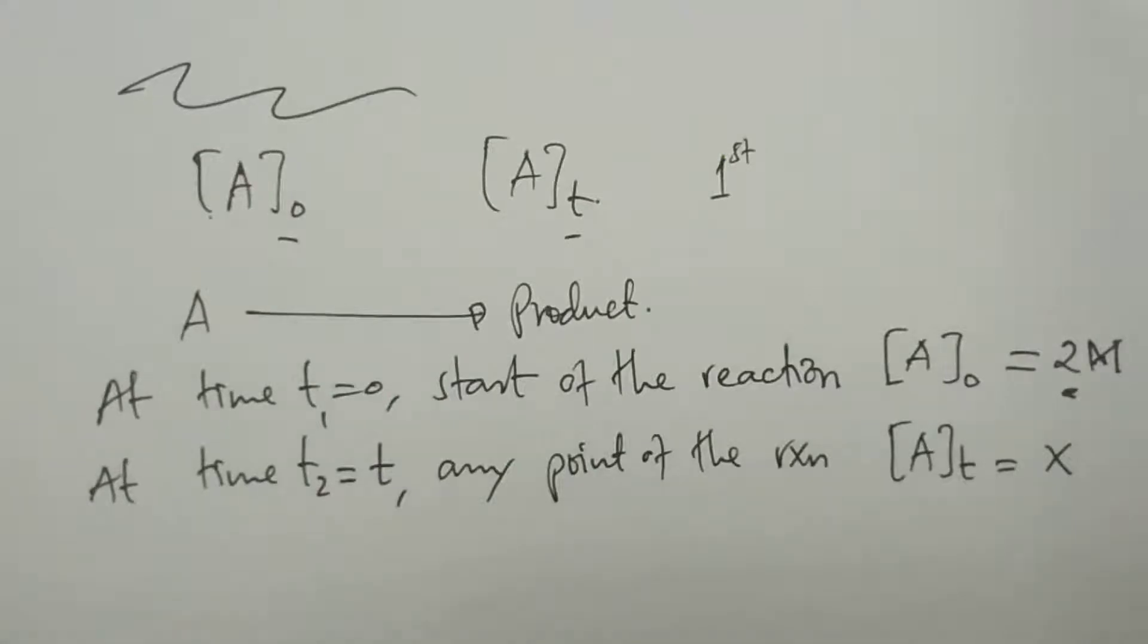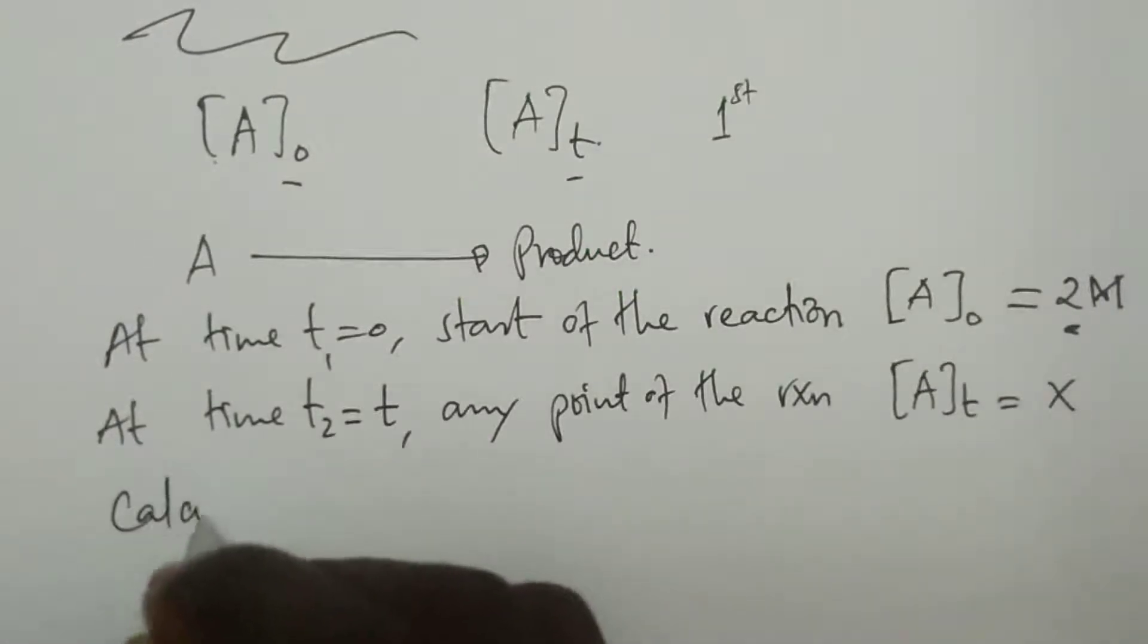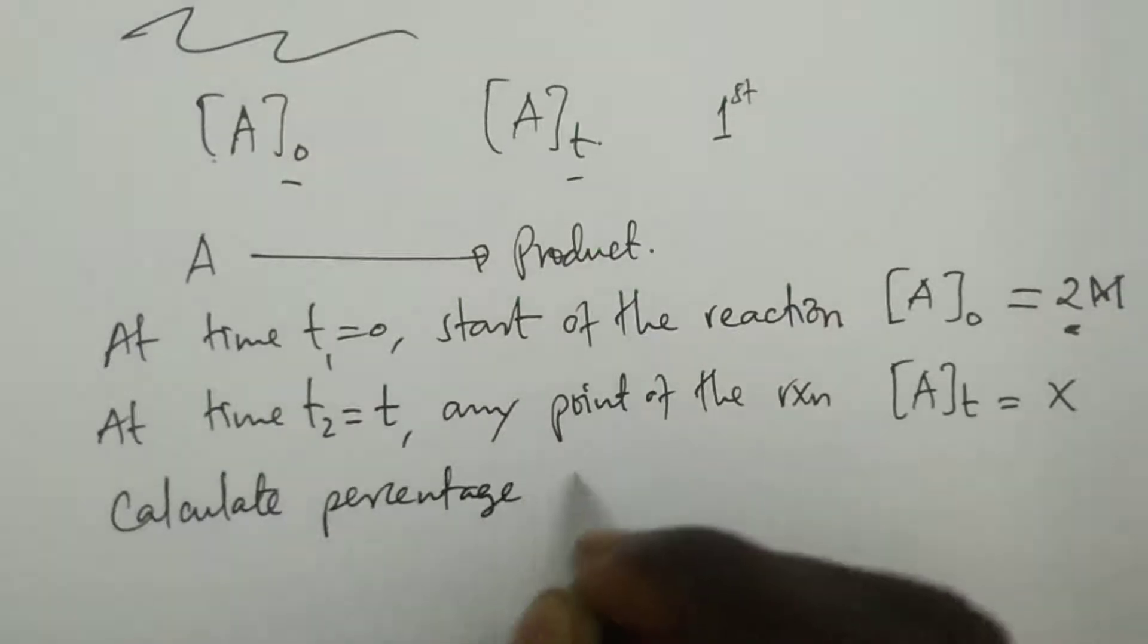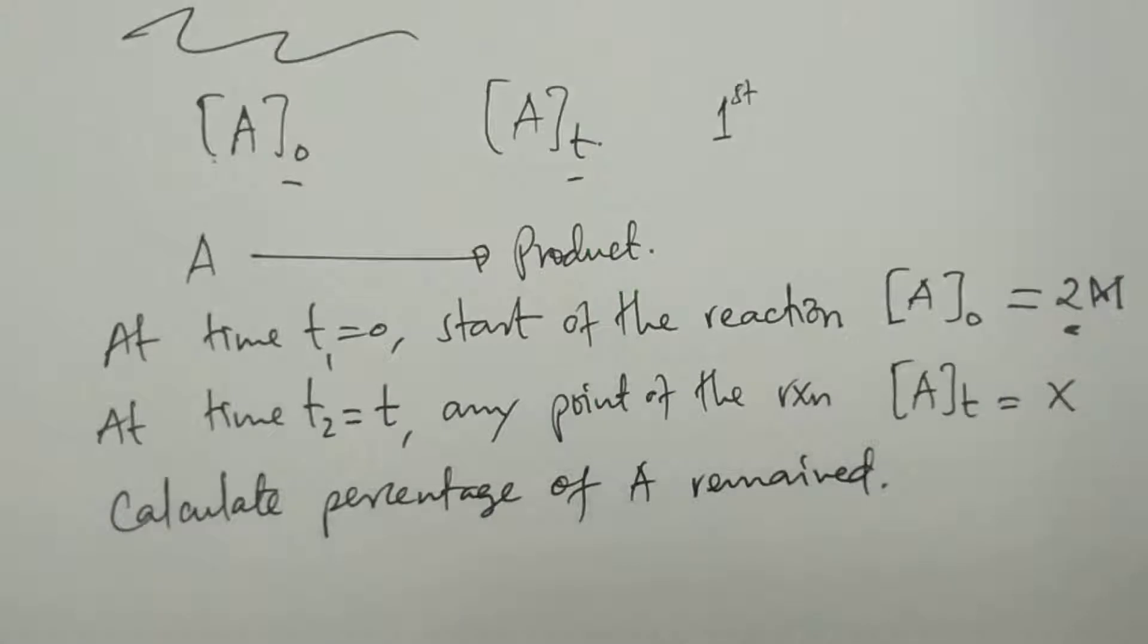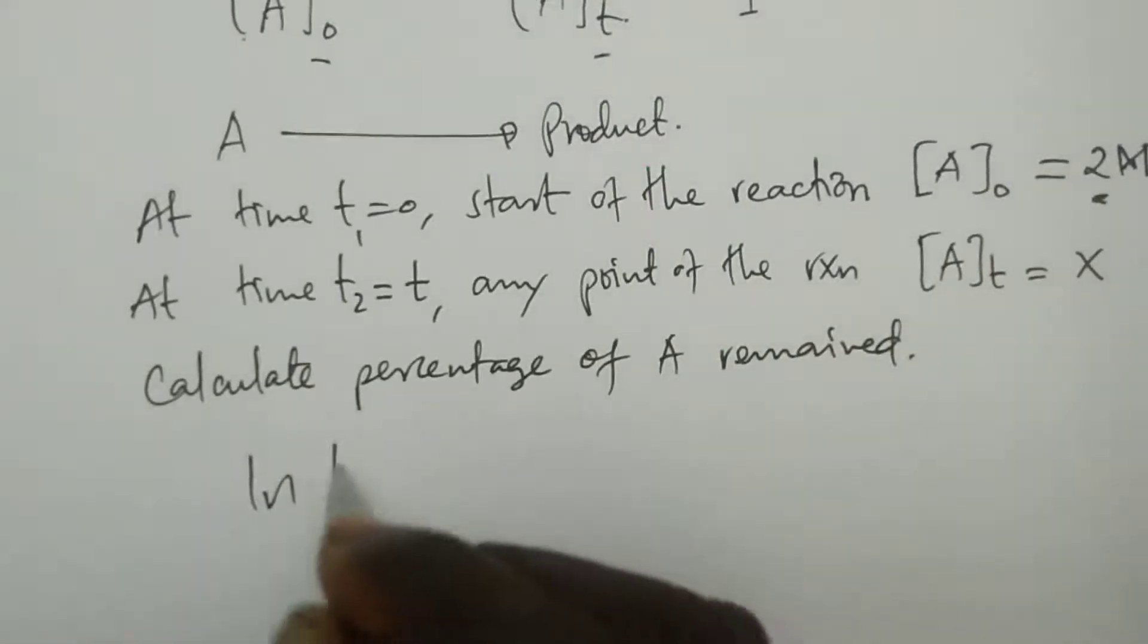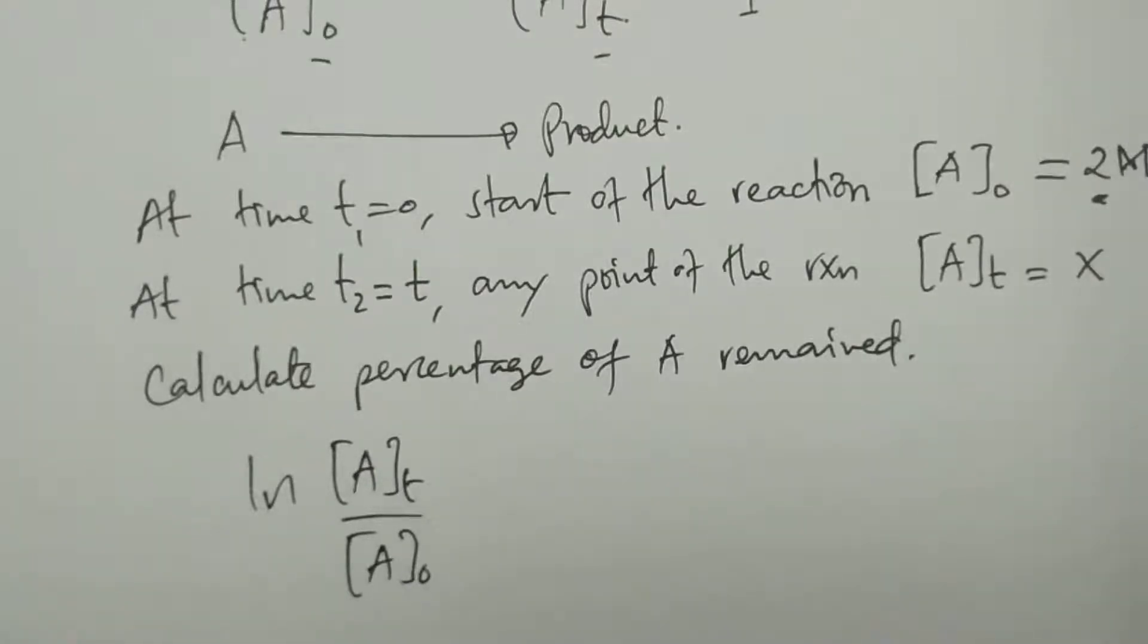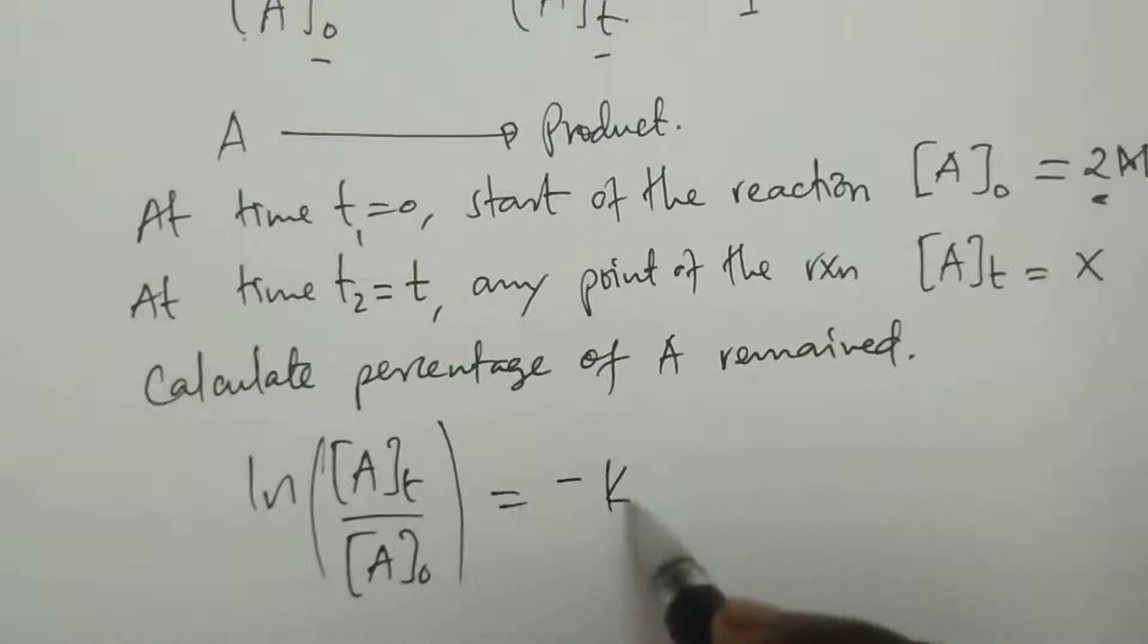Now, there are many questions that are asked. For example, you're asked to calculate percentage of A remained. Calculate percentage of A remained after time so and so. Now, if we consider the integrated equation for first order, it is ln of concentration Aₜ divided by concentration A₀ equals negative Kt. Let me check if this equation is correct. Yeah, the equation is correct.